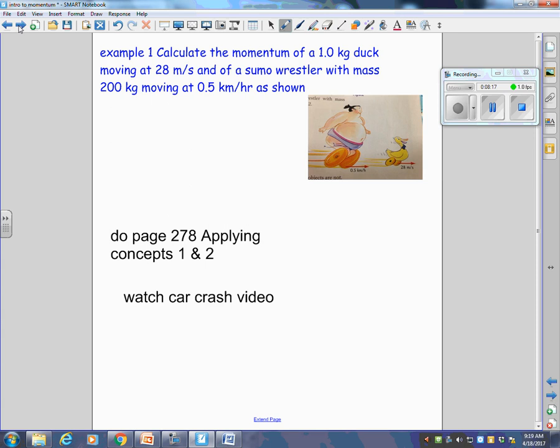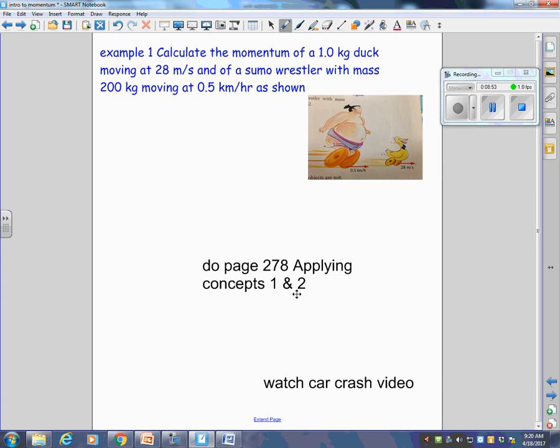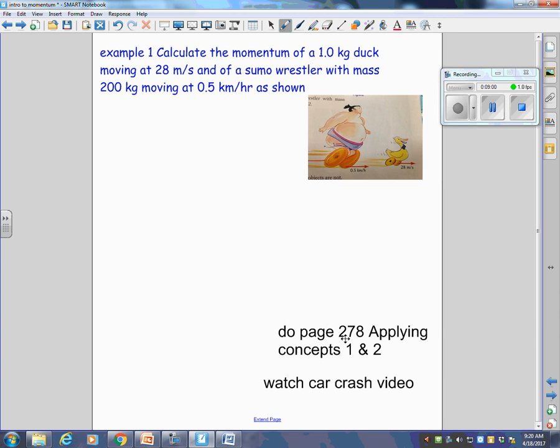In the textbook, there's a really stupid example where there's a sumo wrestler. It says calculate the momentum of a one kilogram duck, moving at 28 meters per second, which is pretty darn fast, and of a sumo wrestler with a mass of 200 kilograms, moving at 0.5 kilometers an hour. Shall we do this example? Do you want to jot the question down? You jot it down.